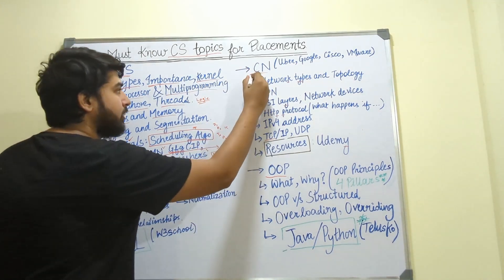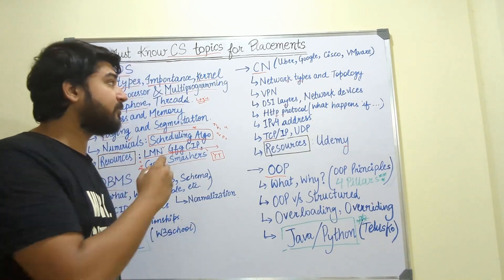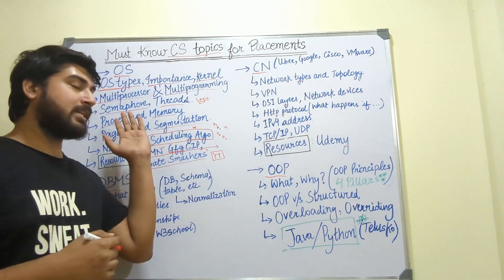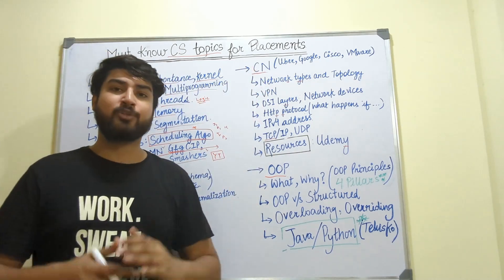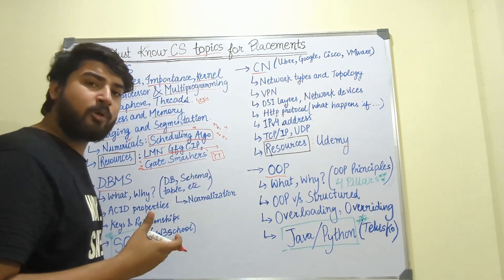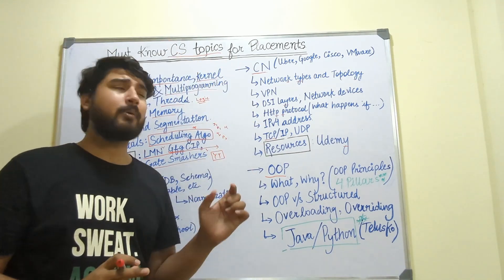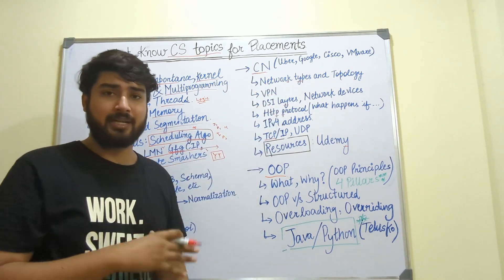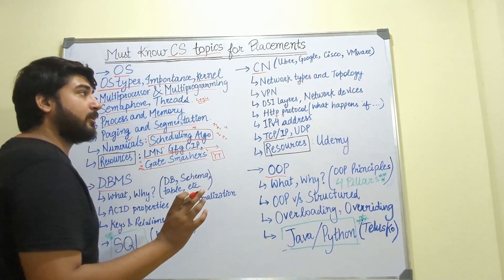Once you've covered operating system, the next part is computer networks, which is also very, very important. There's a difference between the two: when I was in college, I was getting the best grades in operating system, but in computer networks I was on the verge of failing. That's because operating system has some logic-based problems and numericals, but computer networks is purely theoretical for most of the part — which makes it very boring to learn. But I'll tell you the interesting and fun way to learn it.